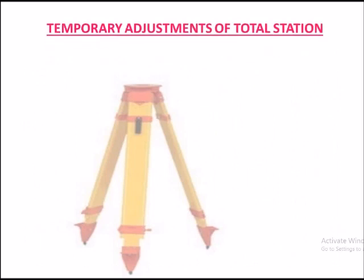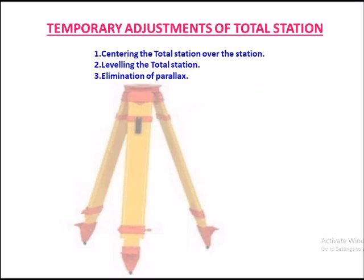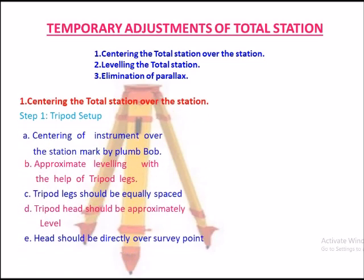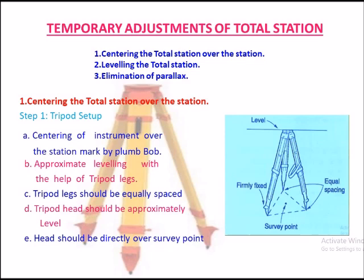Temporary adjustment of total station. There are three steps of temporary adjustment of the total station. First of all, centering the total station over the station. Step one: tripod setup — spread the legs with equal spacing and level it.